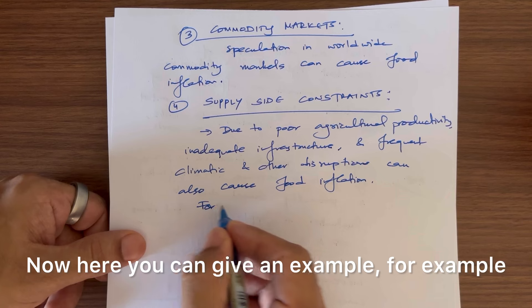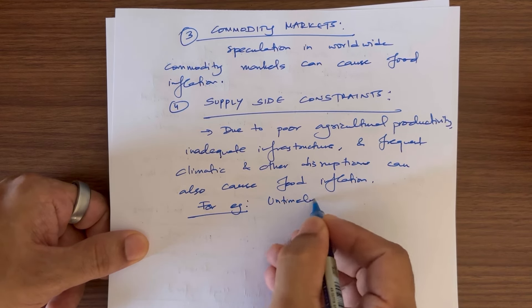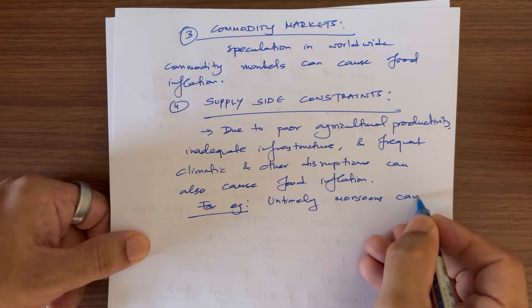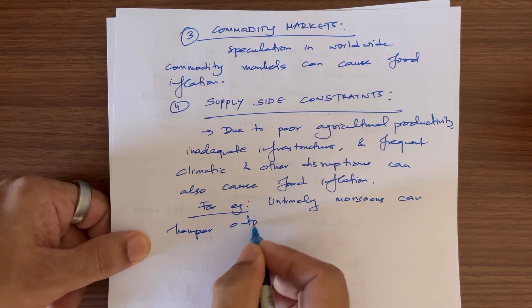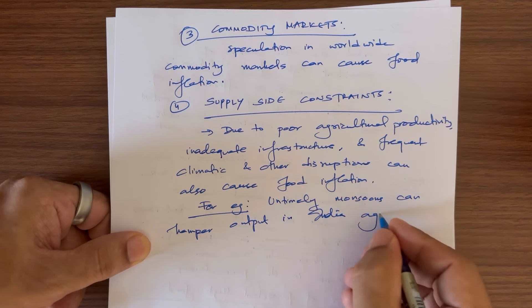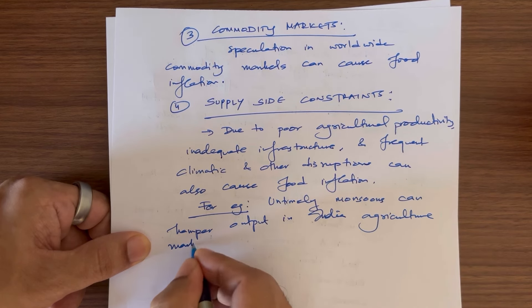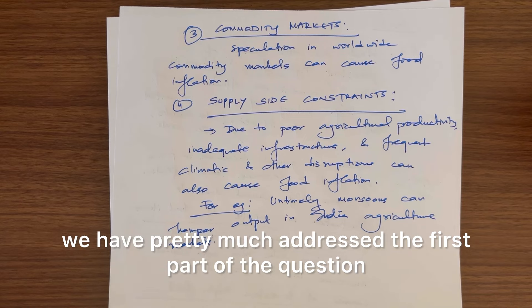Now, here you can give an example. For example, untimely rains, untimely monsoons can hamper output in Indian agriculture markets. Now, we have pretty much addressed the first part of the question. We can move on to the second part which is effectiveness of RBI monetary policy.